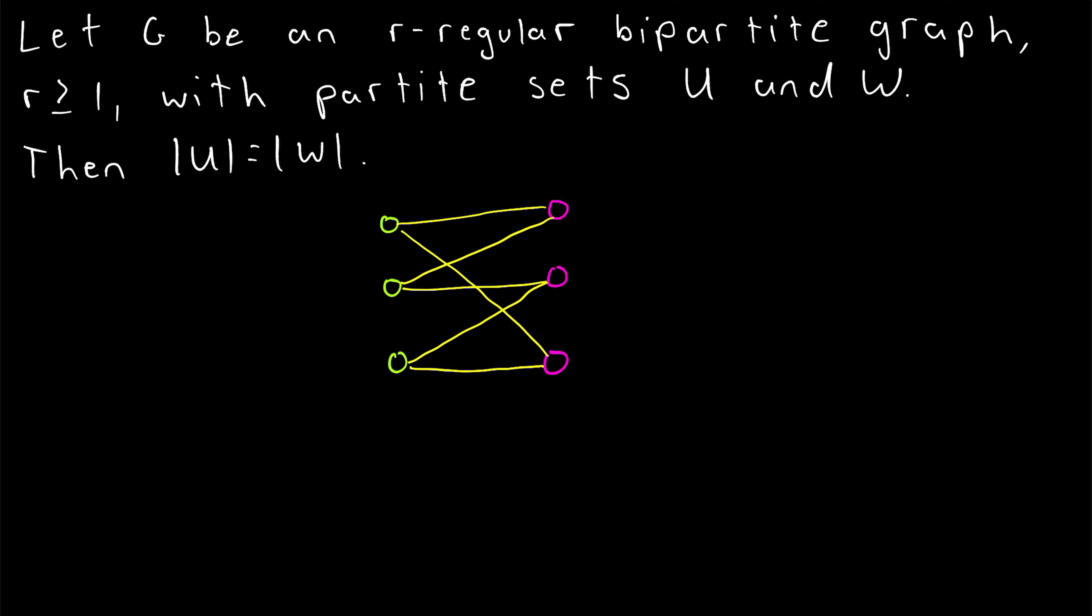Here's an example of the situation we're talking about. Here r is equal to 2. This is a bipartite graph that is 2-regular. So every vertex in one partite set is adjacent to two vertices in the other partite set.